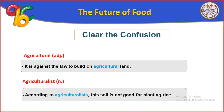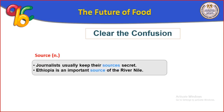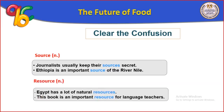Agriculturalist is the agricultural person — عالم الزراعة. Example: According to agriculturalists, this soil is not good for planting rice. Source (مصدر) — example: journalists usually keep their sources secret. Ethiopia is an important source of the River Nile.